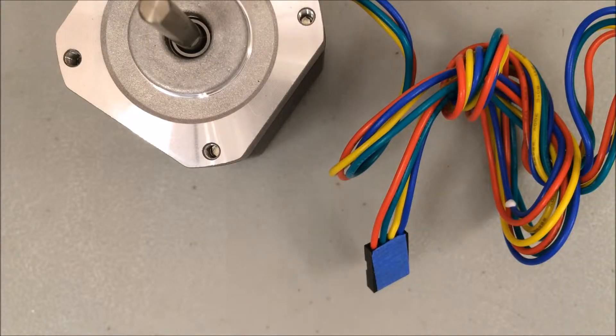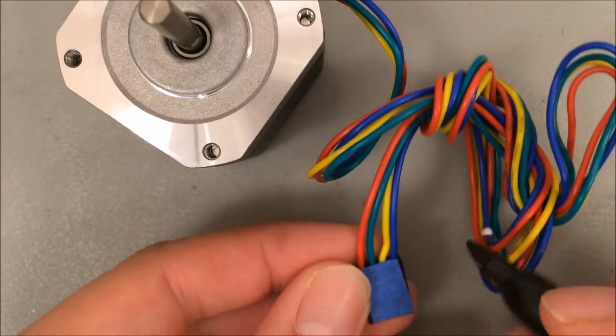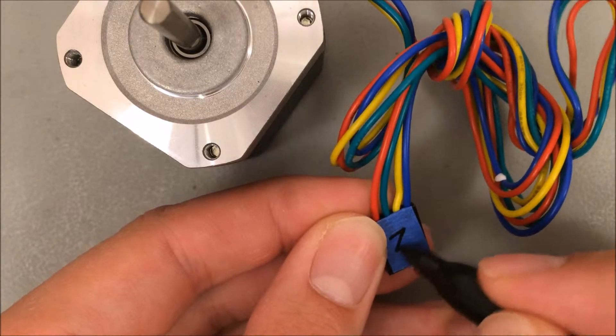As is the case with every motor, if yours isn't labeled, go ahead and add the label now. Just mark it with the letter Z for the Z-axis motor.